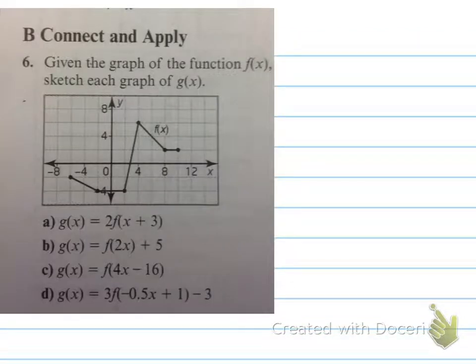Next, connect and apply. Given the graph of the function f(x), sketch each graph of g(x). Now, here's an example of where I actually just give you a graph, and I ask you to transform it. We're going to ignore a, b, and c. So, we're just going to ignore those three, and we're going to go straight to d. The reason I want to be able to do that is if we look at d, we should be able to apply all of these transformations. Ready? Here we go.